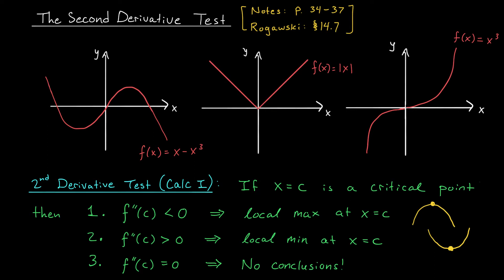The function could have a local max, a local min, or maybe neither. We could be in this situation, where our function has an inflection point. It's also possible that your second derivative just doesn't exist at x equals c, and hence the second derivative test doesn't apply.